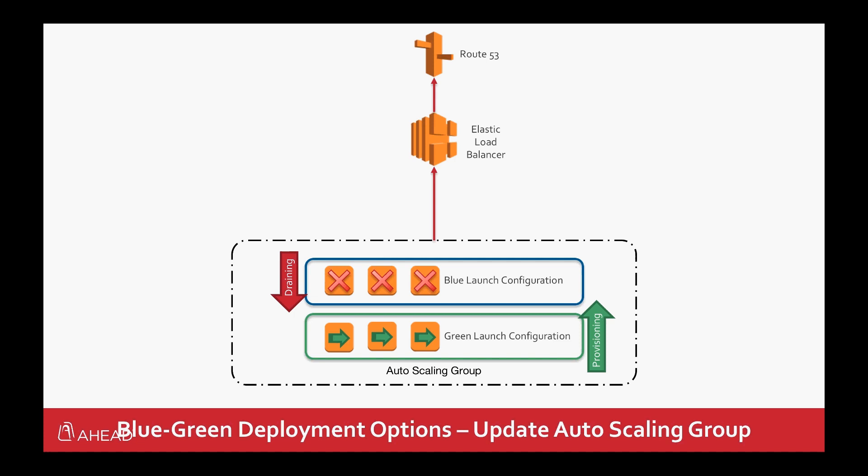The third way is that within a single auto scaling group, we update the launch configuration. We have the blue launch configuration and create a new launch configuration for green with the new image and our new application. We slowly drain out the blue configuration and bring up the green configuration to affect a swap that way.